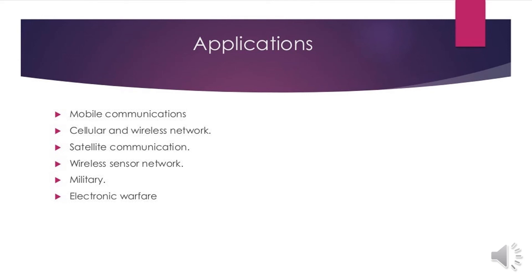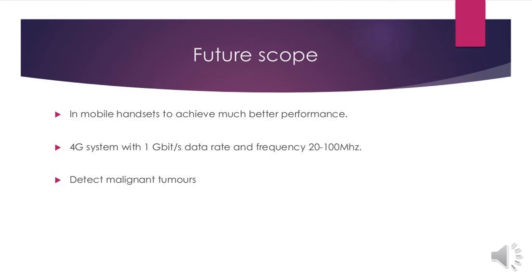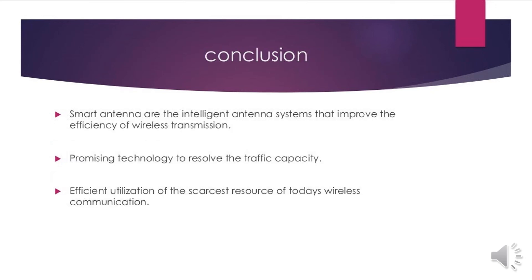Applications of smart antennas include mobile communications, cellular and wireless networks, satellite communication, wireless sensor networks, military, and electronic warfare. For future scope, smart antennas in mobile handsets can achieve better performance using 4G systems with 1 gigabit per second data rates and frequencies of 20 to 100 MHz. They are also used for detecting malignant tumors. In conclusion, smart antennas are intelligent antennas that improve the efficiency of wireless transmission and are a promising technology to resolve traffic capacity issues and enable efficient utilization of scarce wireless communication resources.